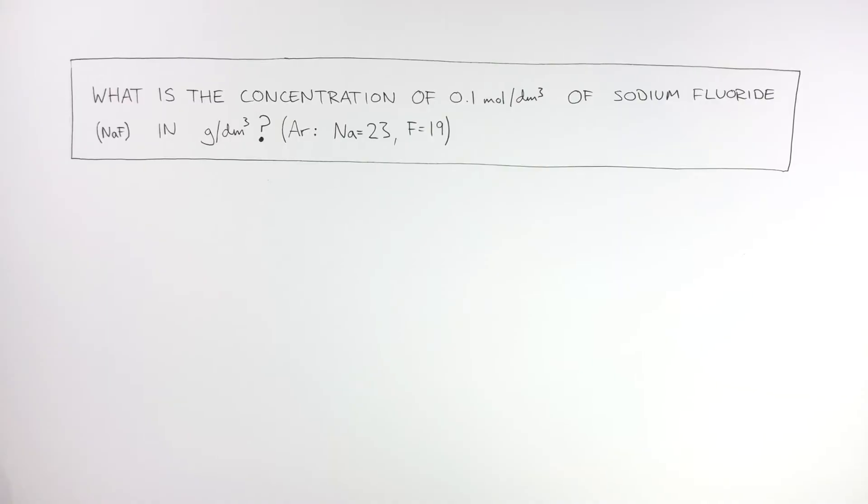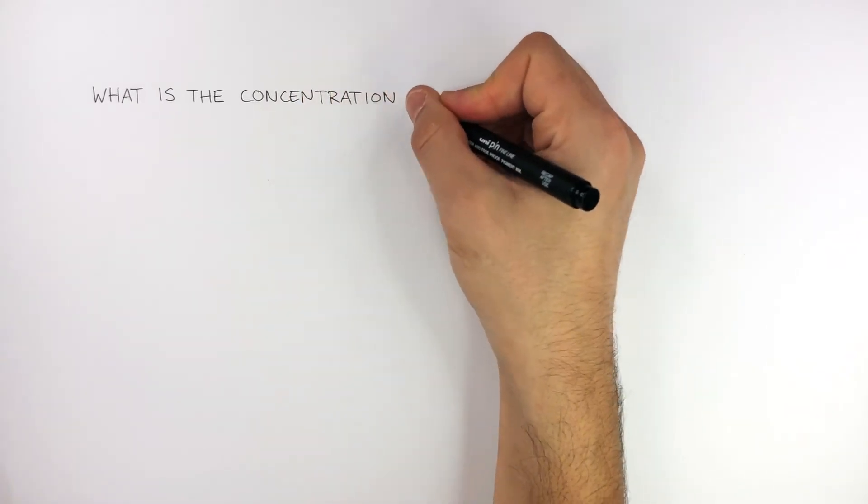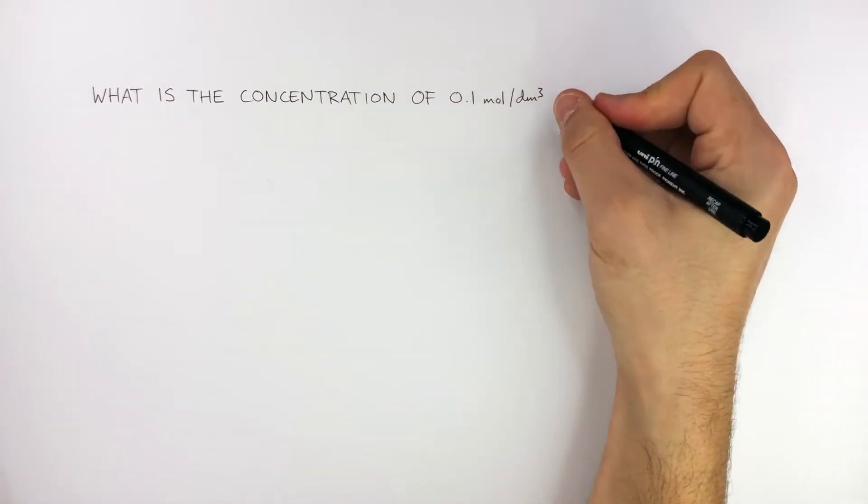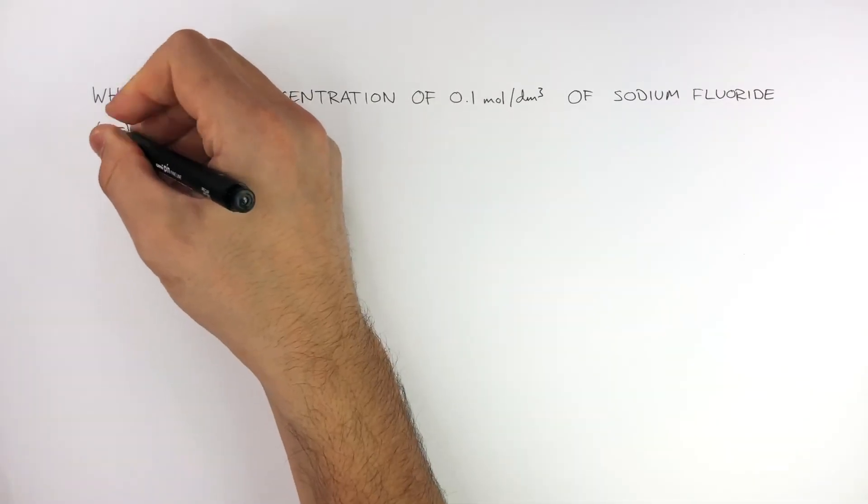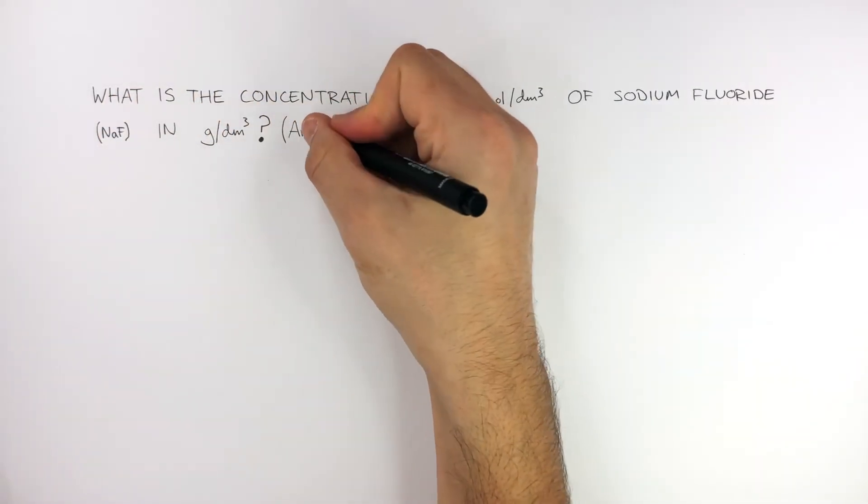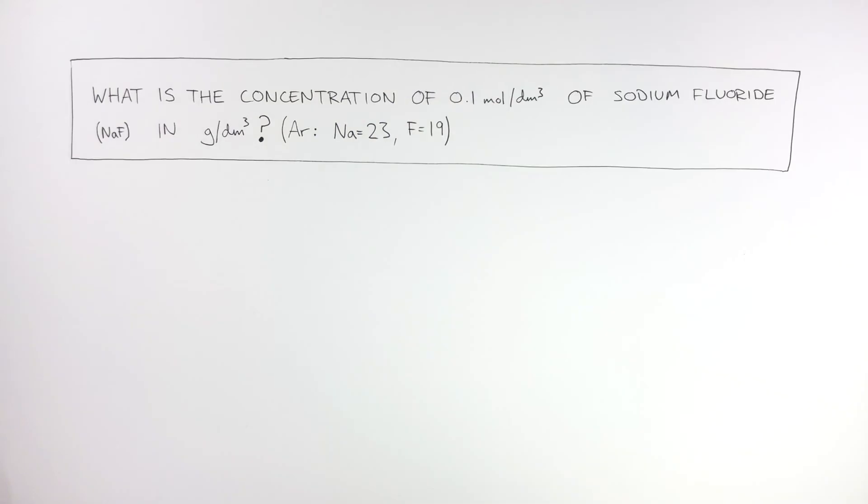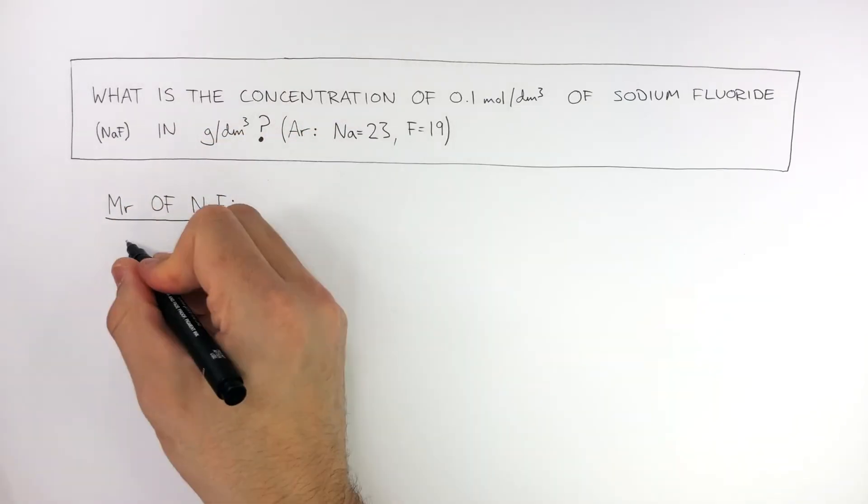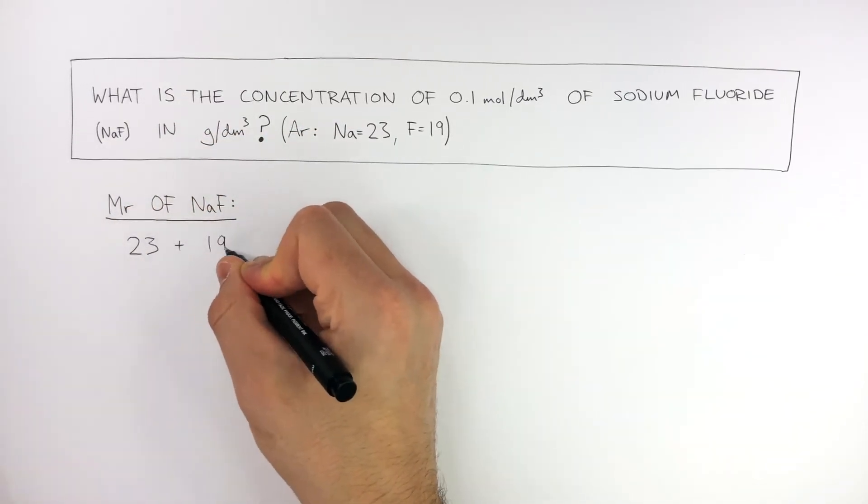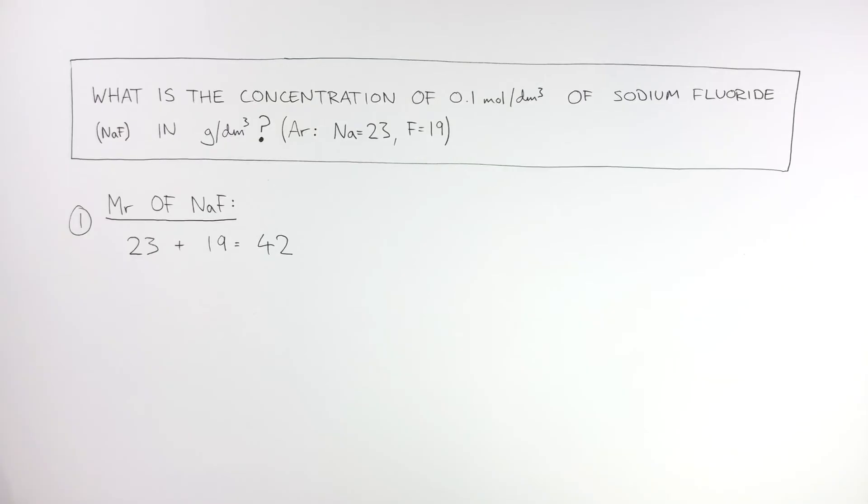In this exam style question, you're being asked what is the concentration of 0.1 mole per decimeter cubed of sodium fluoride, NaF, in grams per decimeter cubed? And these are the relative atomic masses. The first step is to figure out the MR of sodium fluoride. This is done by doing 23 plus 19 equals 42.